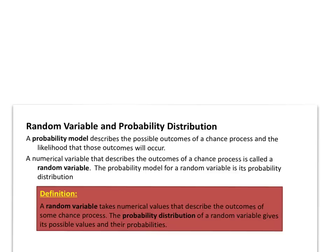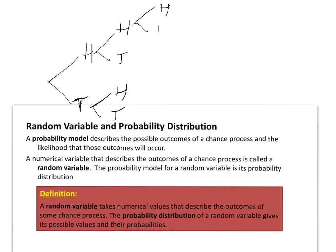A tree diagram helps us organize and ensure that we have all possible outcomes. We flip the coin once and either get heads or tails, then flip a second time and either get heads or tails. This tree diagram helps us organize and get all possible outcomes from flipping three coins.